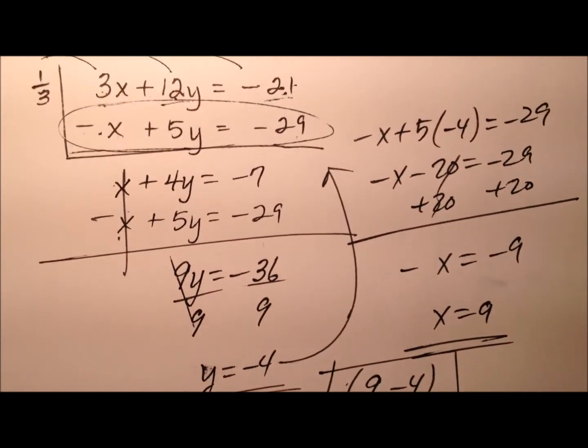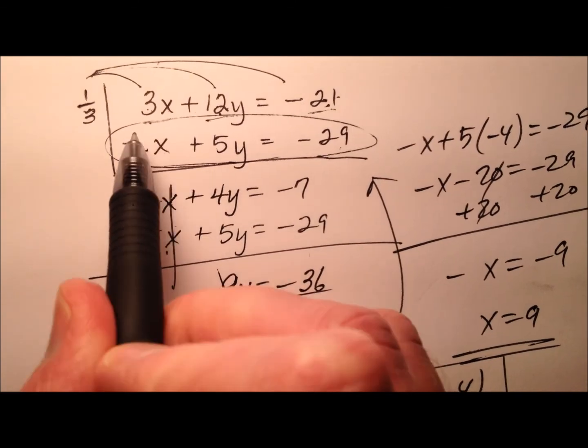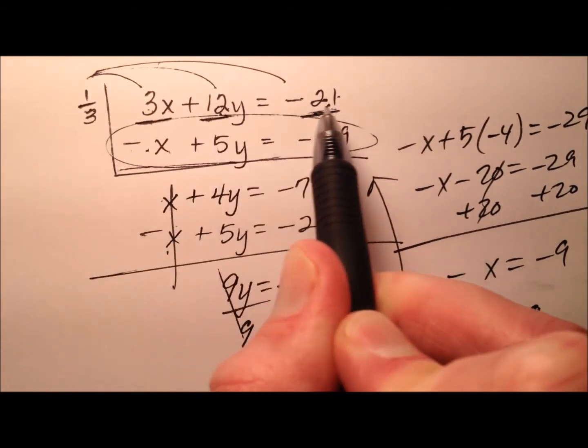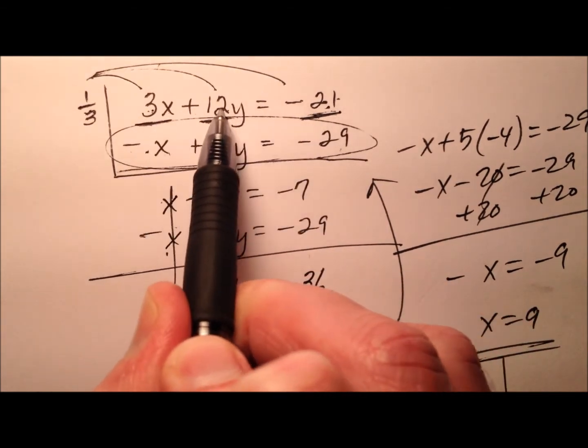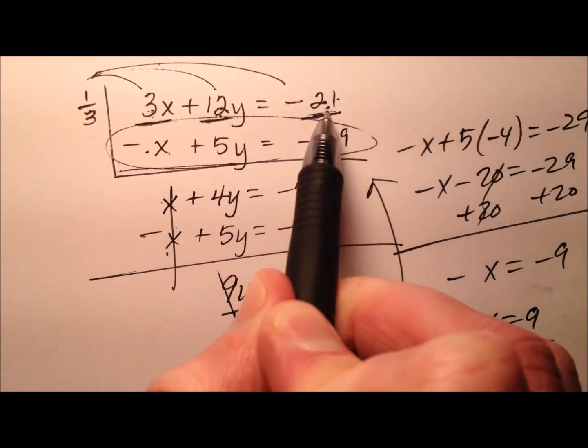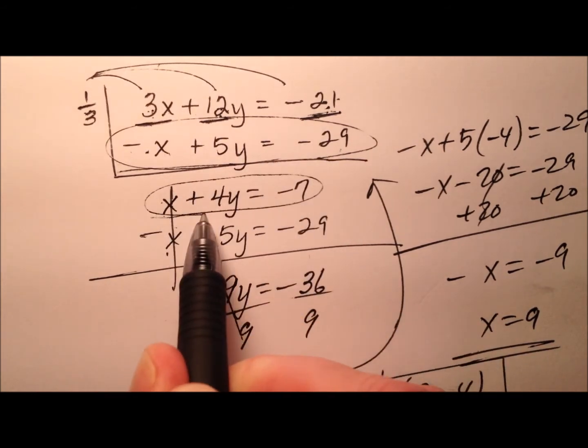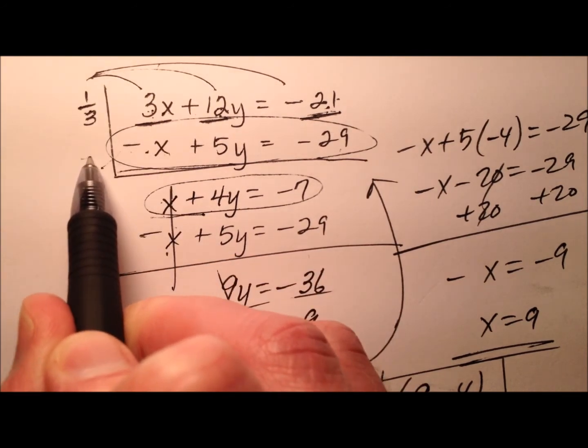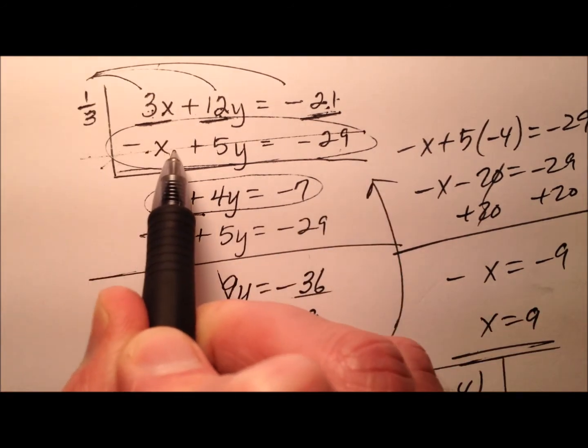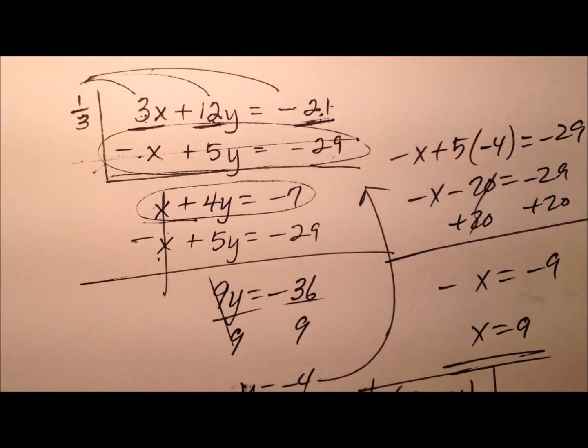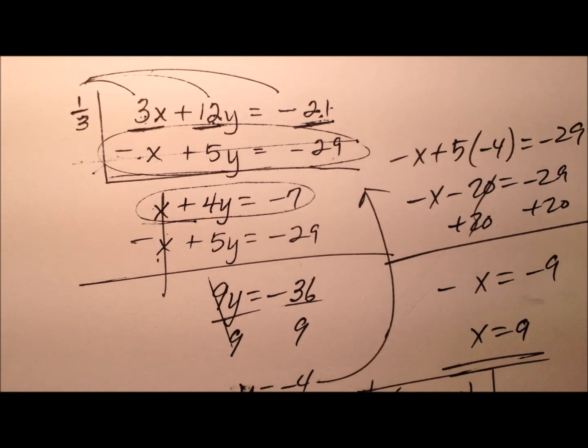And again, let's talk about the strategy that we used. We noticed that all the coefficients and constants, so all the numeric values in the first equation were actually multiples of 3. So we just divided every term by 3 in order to get smaller numbers instead of multiplying all the terms in the second equation by 3 and getting even larger numbers. So again, we're focusing on making our numbers more manageable so we can do everything in our head and just do the process a little more quickly.